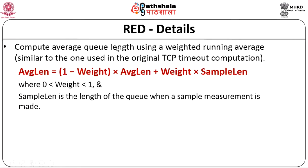In RED, we first calculate the average queue length as a weighted running average, similar to TCP's timeout calculation. We take the current (sample) queue length and the previous average queue length, weighted by a factor W (between 0 and 1). In a software-based implementation, this average length is calculated every time a new packet arrives at the router. In hardware, it can be calculated at fixed sampling intervals.